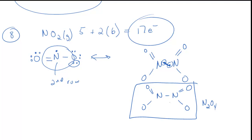I think that's enough for Lewis structures. Two different videos, eight different examples covering molecules that meet the octet rule, some that exceed it, some that are electron deficient, and the concept of resonance. We'll do more Lewis structures when talking about formal charge — which is quite important for figuring out which of a couple of different Lewis structures is better. We'll do that in another video. Have a wonderful day. Take care.